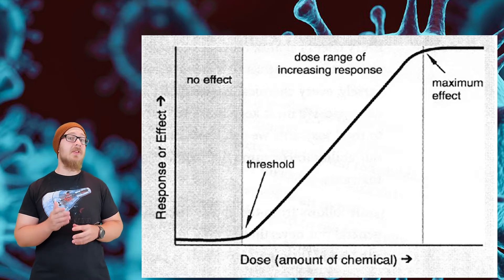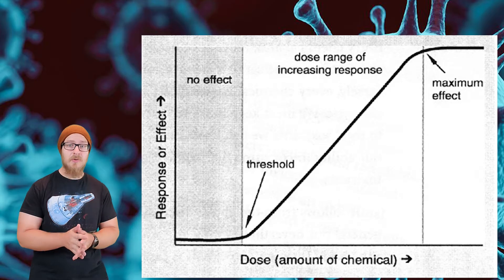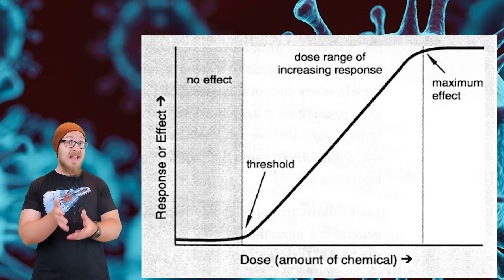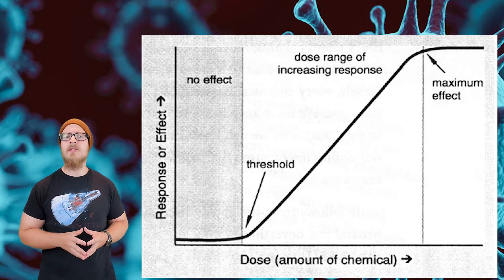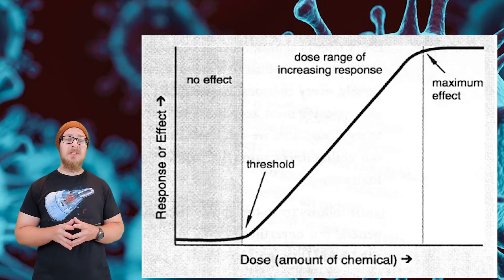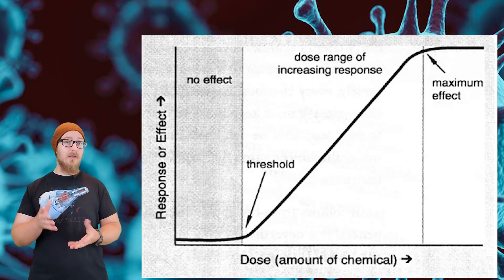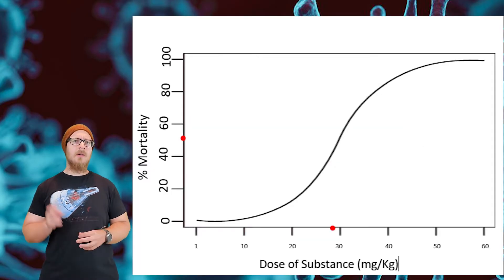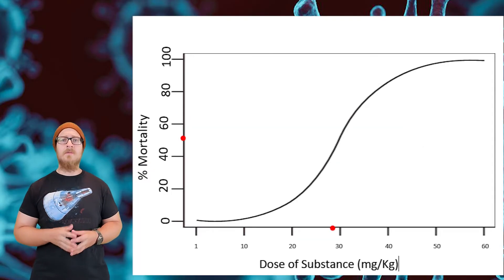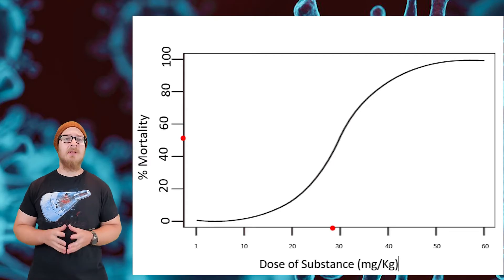What's important to note is that the dose makes the poison. Many substances will have a threshold where any dose below the threshold doesn't result in any negative health effect. This is how the EPA determines the ambient air quality standards and the clean water standards. There are two types of dose-response analyses that we commonly see.